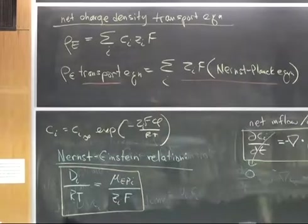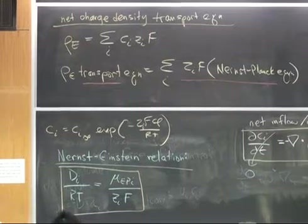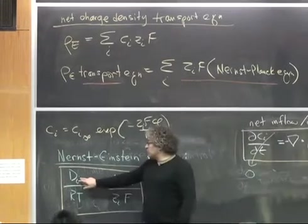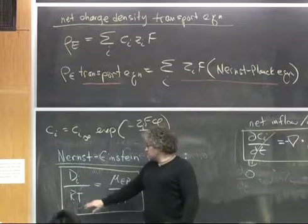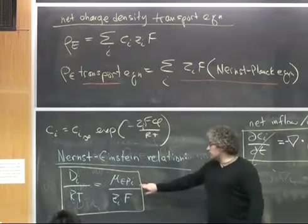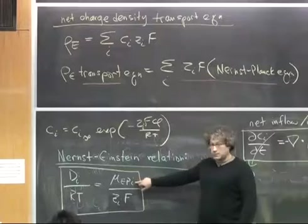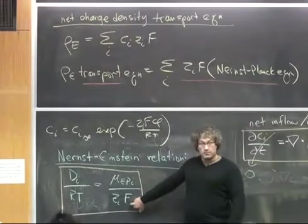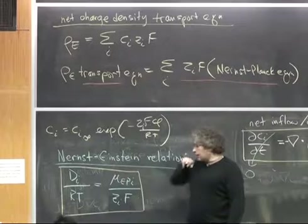And that relation is the Nernst-Einstein relation. This Nernst-Einstein relation says that the diffusivity of some species normalized by the thermal energy of the system is equal to the electrophoretic mobility of these species normalized by Z times F.